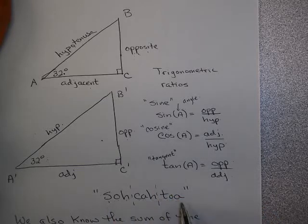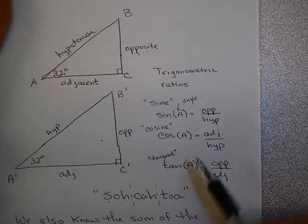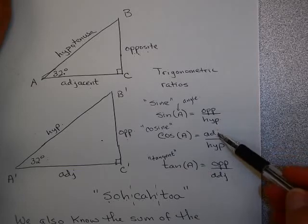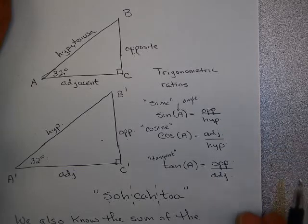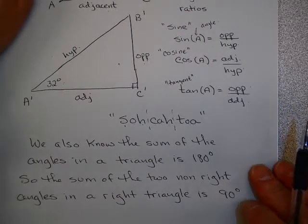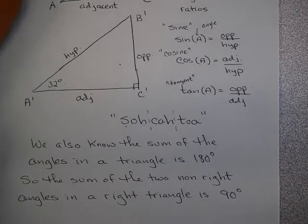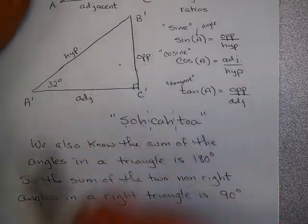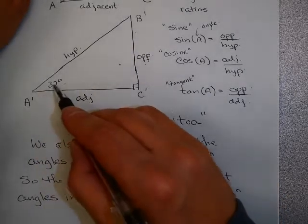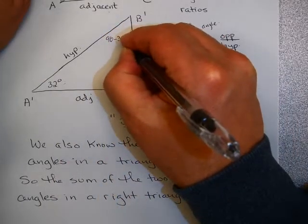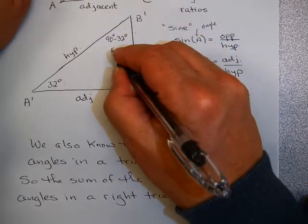On the quiz and test, you will have to know these. Remember, sine, cosine, and tangent always refer to an angle — that helps you determine what is opposite, adjacent, and hypotenuse. A couple of other useful facts: the sum of the angles in a triangle is 180 degrees. Since we're dealing with right triangles, the two non-right angles must add up to 90 degrees. So if one angle is 32 degrees, the other is 90 minus 32, which is 58 degrees.